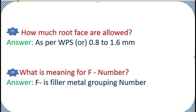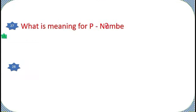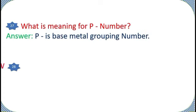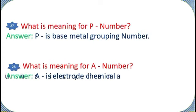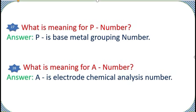What is meaning for F number? Answer: F is filler metal grouping number. What is meaning for A number? Answer: A is electrode chemical analysis number.